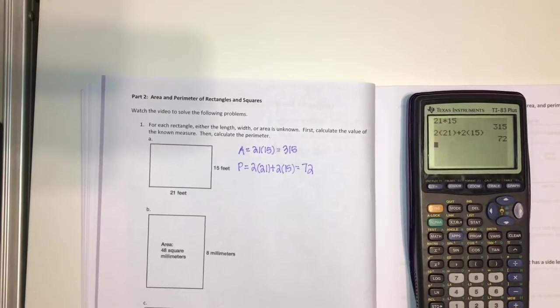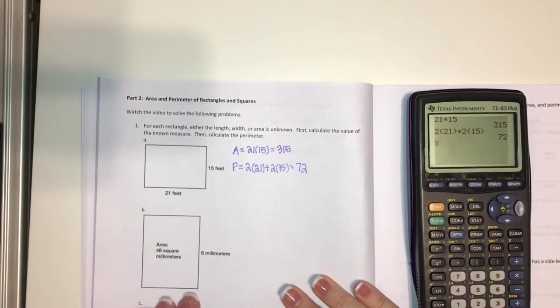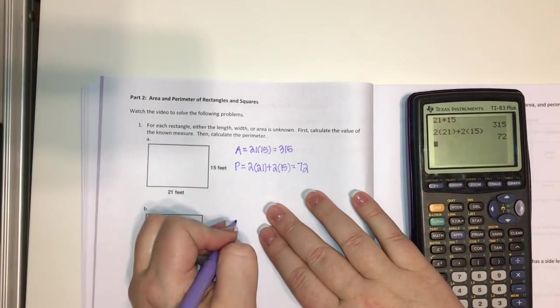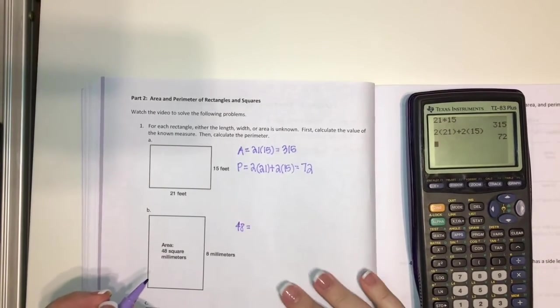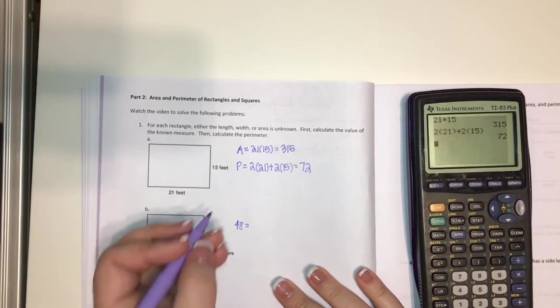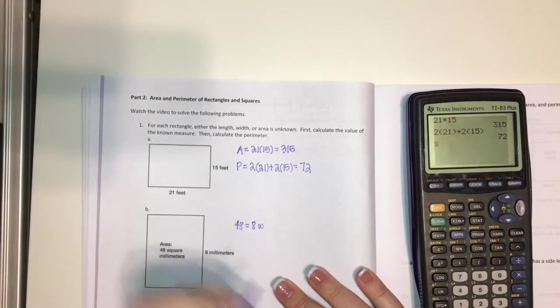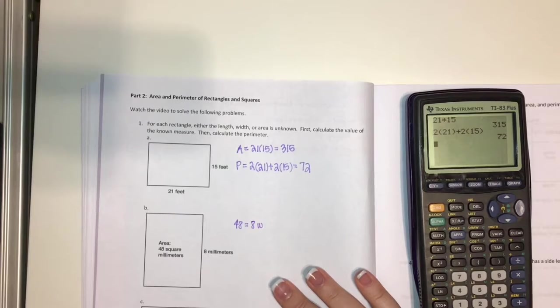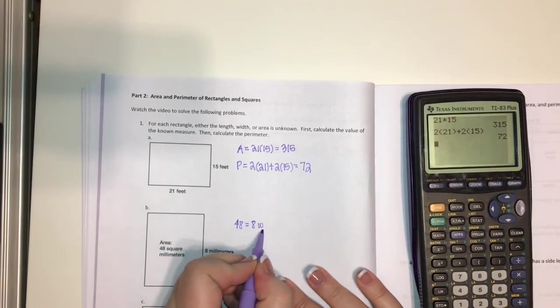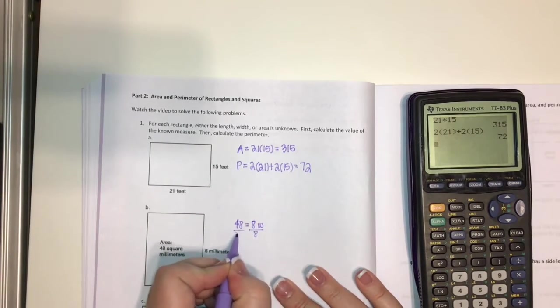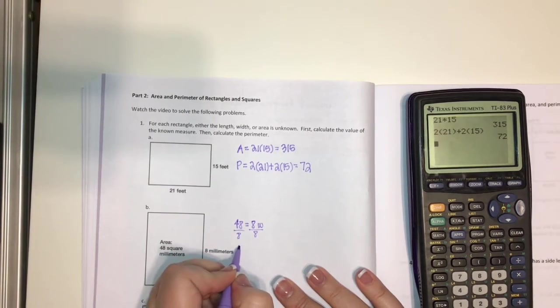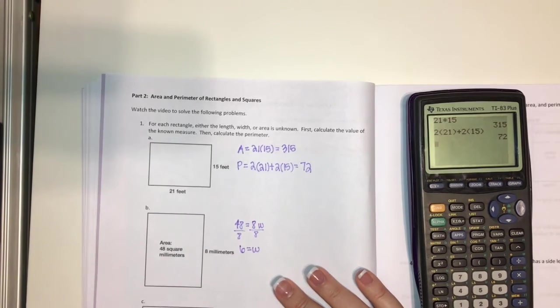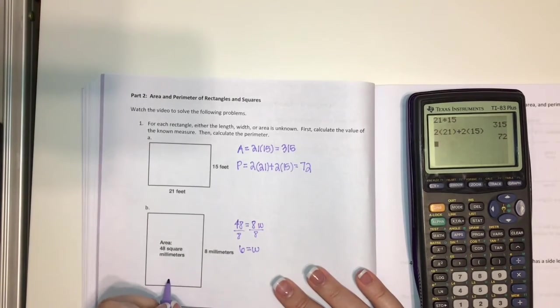Now in this next problem they gave us the area, but they did not give us this base down here. So I know that my area is 48. That would be the width. And I know 48 equals 8 times the width, right? So now what do I do? I have to work it backwards. So I'm going to divide both sides by 8. And if you remember any multiplication tables, 6 times 8 is 48. So my width is going to be 6. So I'm going to write that in here.